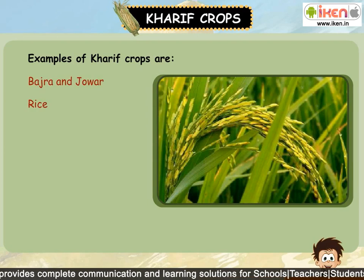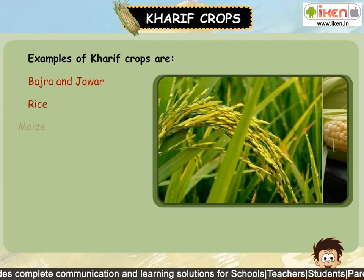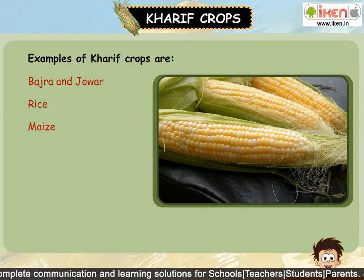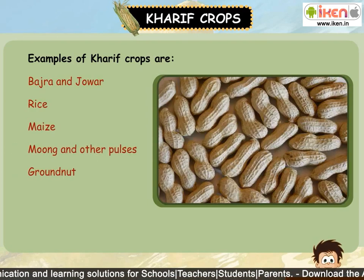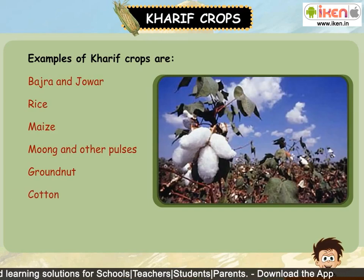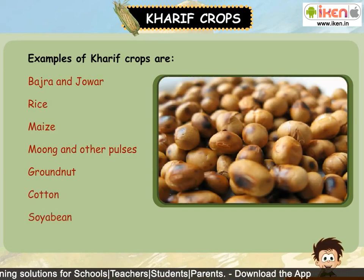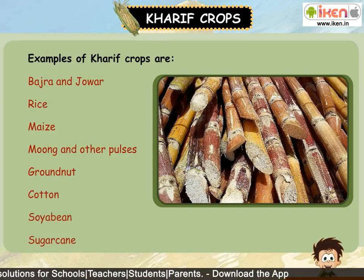Rice, maize, moong and other pulses, groundnut, cotton, soya bean and sugarcane are also examples of Kharif crops.